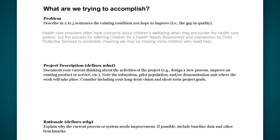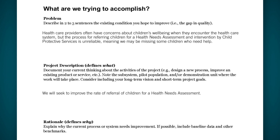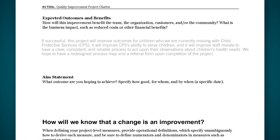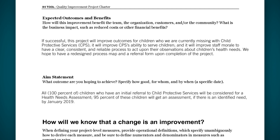The first question — what are we trying to accomplish — prompts you to clearly articulate the problem you're trying to solve. Describe the goal of the improvement in general terms and the rationale for the project, that is, how does the improvement project address the problem you've identified? There is also space to list the beneficial outcomes you're expecting more specifically. Conclude this section by writing your complete aim statement — your official statement of what you're trying to accomplish, specifying how good, for whom, by when. Look for an example in the template.